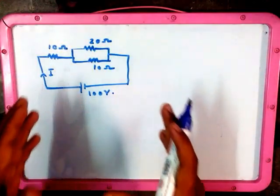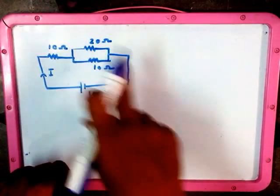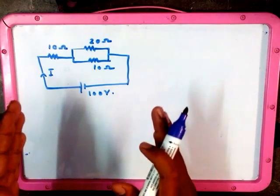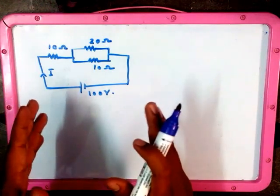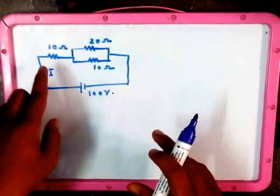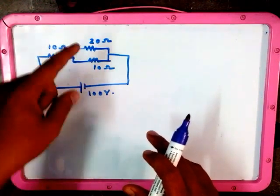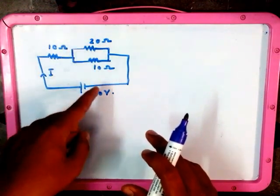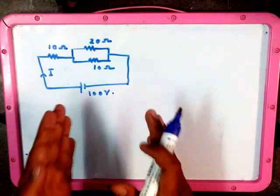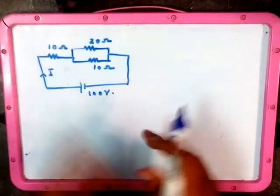We have a problem to find the current in a circuit. We are going to find out the total resistance. We have one resistance, 10 ohm, in series with two resistances which are in parallel, 20 and 10 ohm. The given battery source is 100 volt. We need to find I.